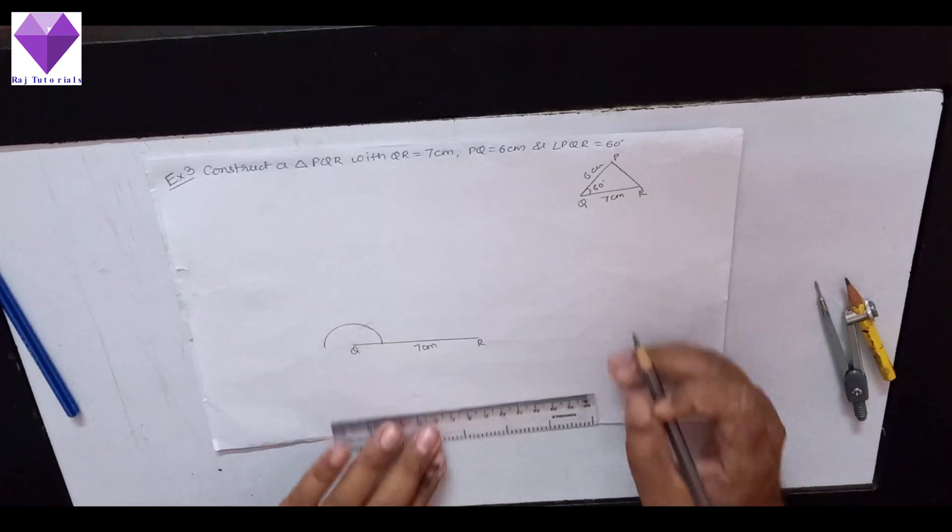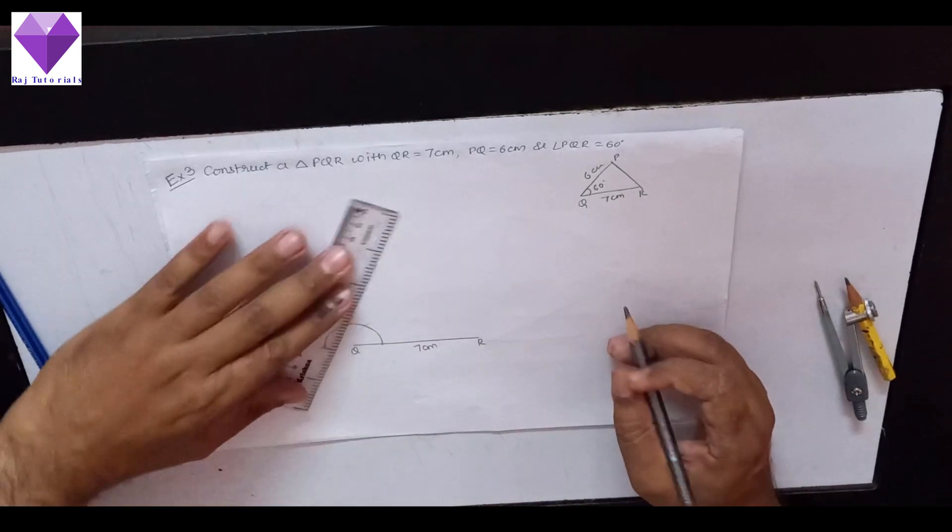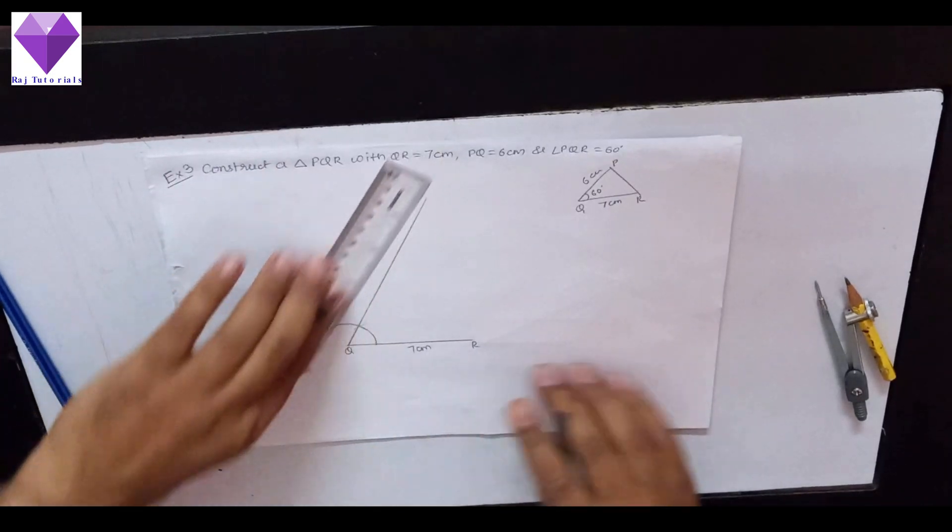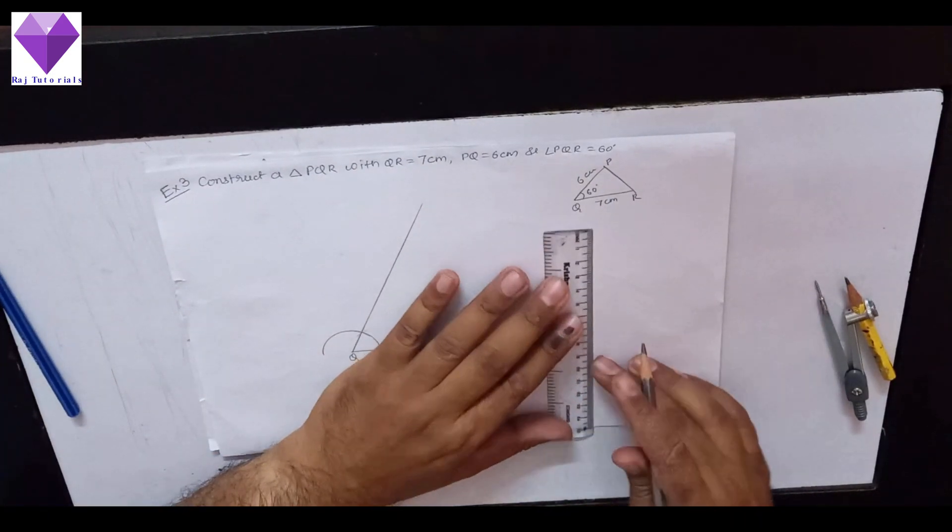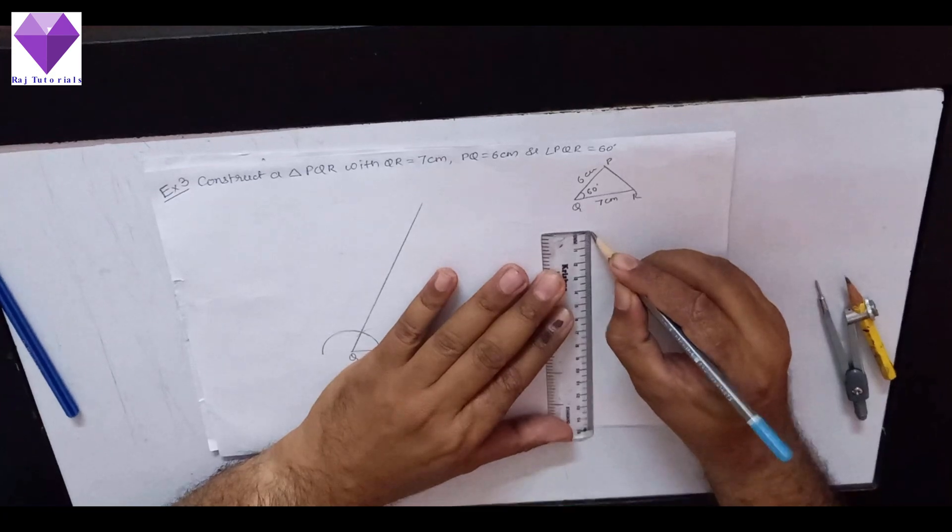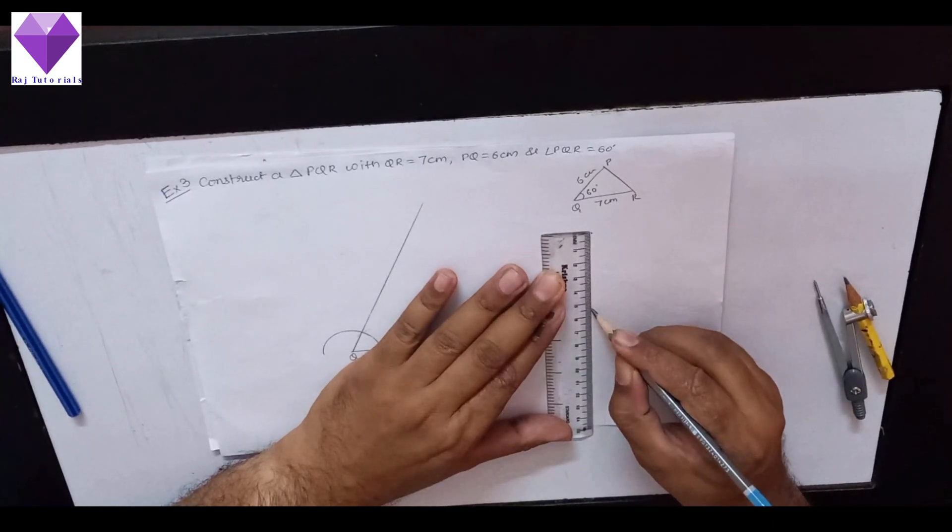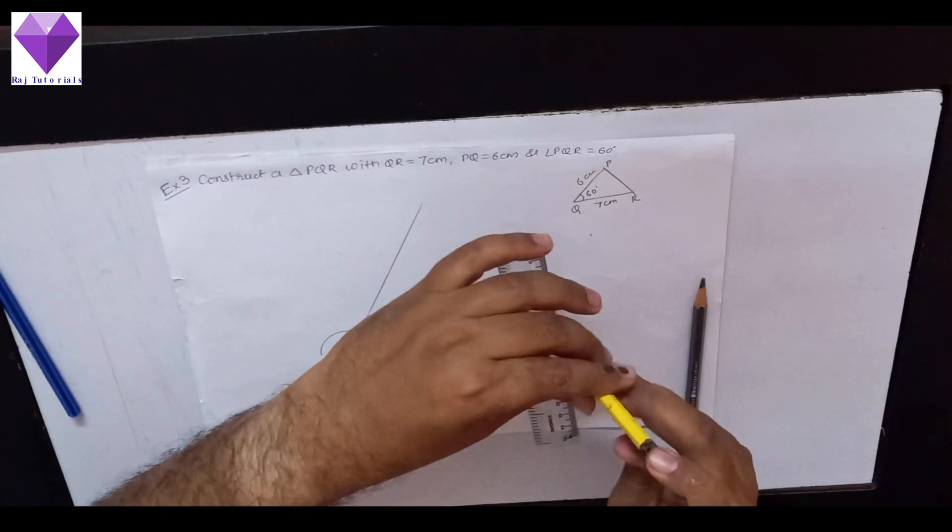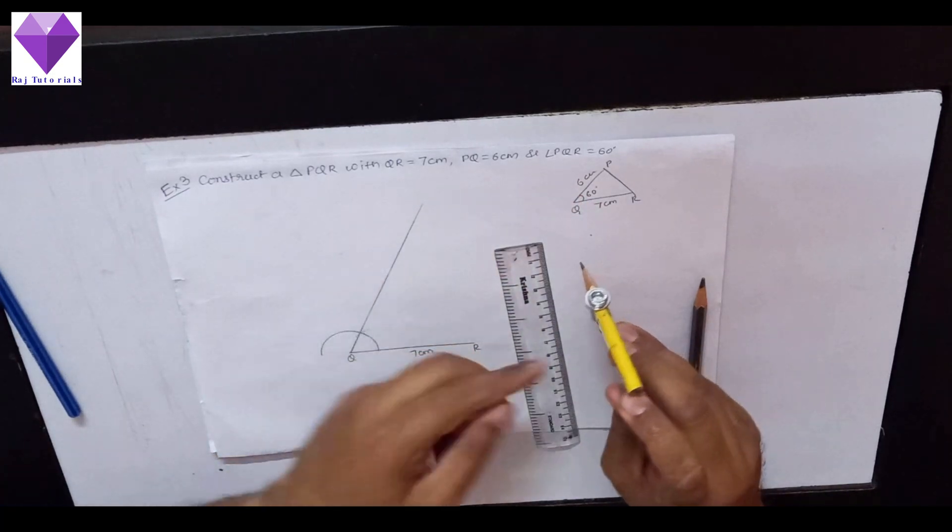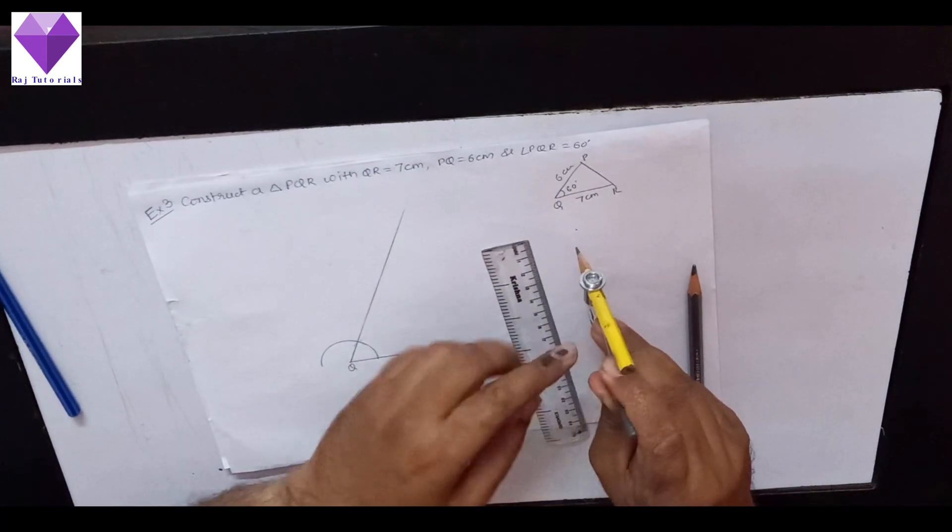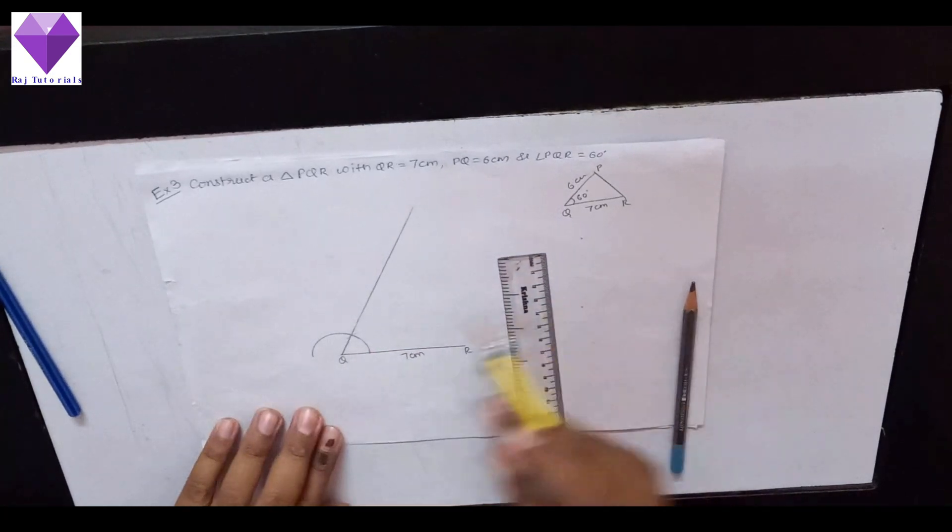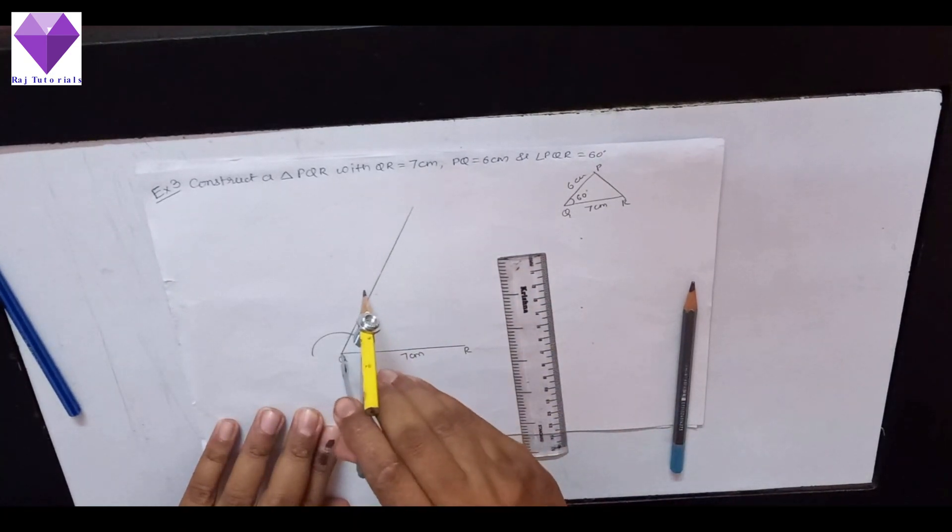Now, I will join this and elongate that. Now, using rounder and measuring 6 cm in the compass, I have to cut that on this line, the angle which we have formed. So now measuring and cutting 6 cm.